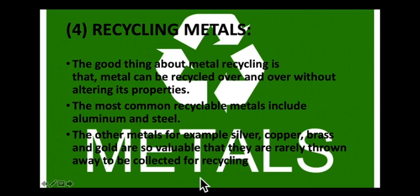Being soft and malleable, aluminium is used in a huge variety of products - for example, cans, foils, kitchen utensils, window frames, and aeroplane parts. Aluminium prevents oxygen, moisture, and bacteria from damaging food, which is why we frequently use aluminium foil boxes and foil wrappings. Even in pharmaceuticals, aluminium is used in packaging because it can store goods without needing refrigeration. You could say aluminium is the superhero of all metals.